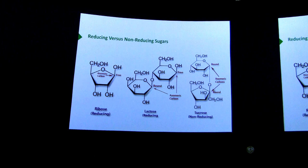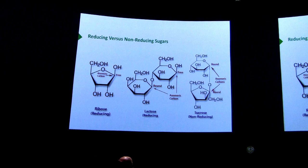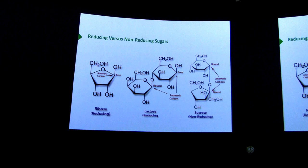What makes a sugar a reducing sugar? The answer is: if it has a free anomeric hydroxyl, it's a reducing sugar. We see ribose on the left side, which is a reducing sugar — there's the anomeric carbon and there's the unaltered hydroxyl. Lactose is a reducing sugar because even though one of its hydroxyls is tied up in a bond, the other one is free. Sucrose is a non-reducing sugar because both anomeric hydroxyls are tied up in the same bond. Since sucrose is in that configuration, it's less easily oxidized than a disaccharide like lactose or a monosaccharide like ribose.